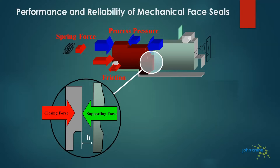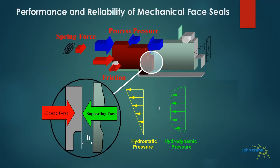In reality, when dealing with fluids such as ethylene, the fluid film created by hydrostatic and hydrodynamic effects between the faces is not strong enough to support the full closing force. To satisfy the equilibrium condition, you need something called contact pressure. Contact pressure is created by the contacts between the high points — the asperities — on the two seal faces. Those asperity contacts create frictional heat, causing vaporization, loss of fluid film, and ultimately dry running.